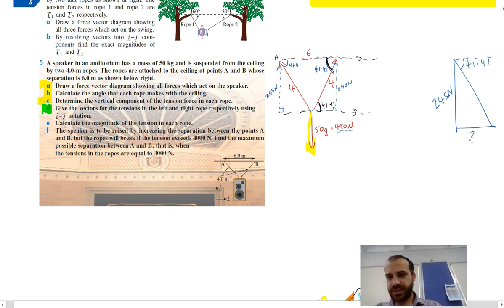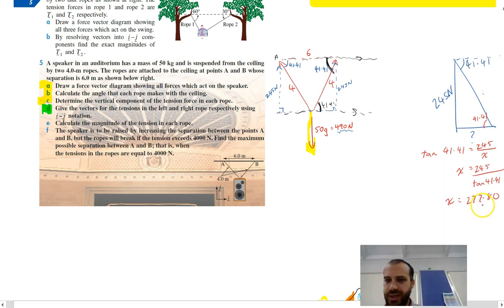And now it's just a very basic like Sohcahtoa. So you can treat those tensions in the I and the J just like you would lengths. Just be careful that you're not mixing and matching. It's either tensions or it's lengths. It's not both. So we can't use the number four here because four is the length of the rope whereas 245 newtons is the force, is the tension in the rope. So just some basic trig. I won't even bore you with it. I'll just write down the answer. This is 277.80.